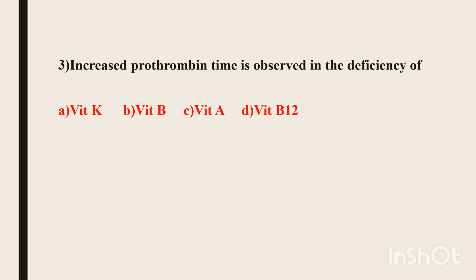The normal prothrombin time is 11 to 13.5 seconds. An increase in prothrombin time occurs in the deficiency of vitamin K. So vitamin K deficiency is the correct answer.